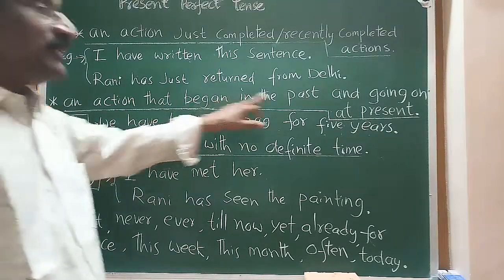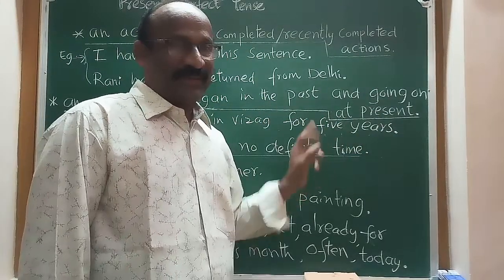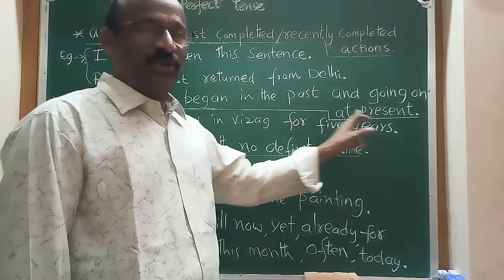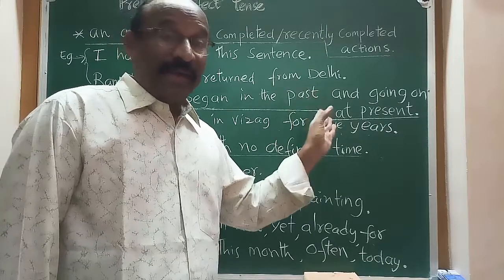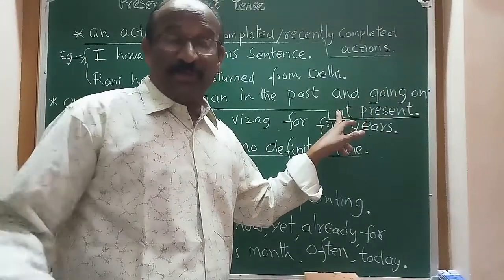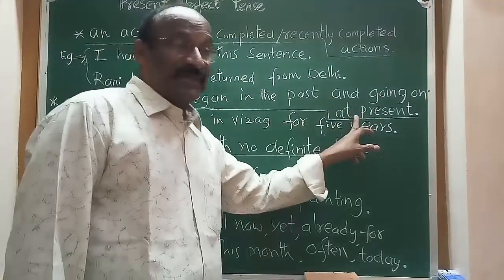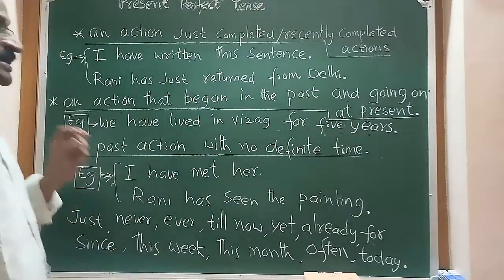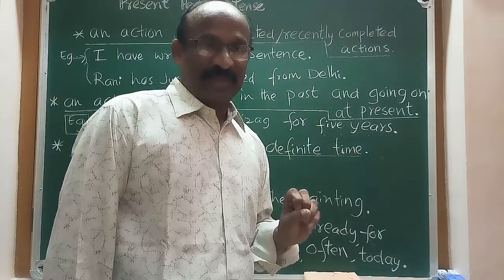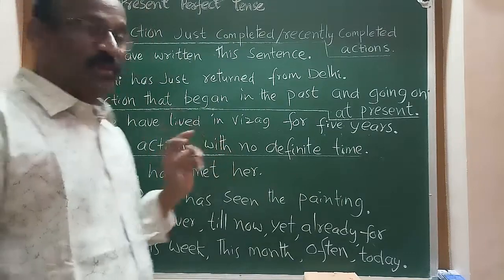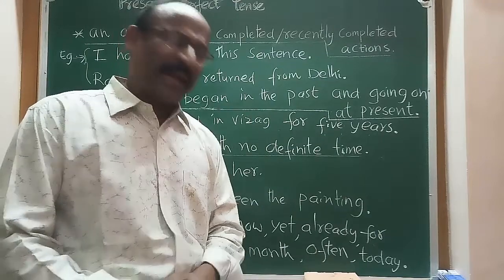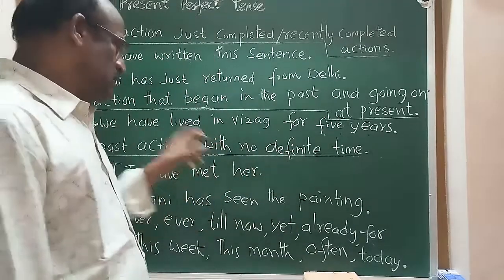The second use: an action that began in the past and is still going on at present. For example, 'We have lived in Sprouts for five years' — this action is still continuing. Similarly, 'We have been living here' — the action started in the past and is still going on at present.